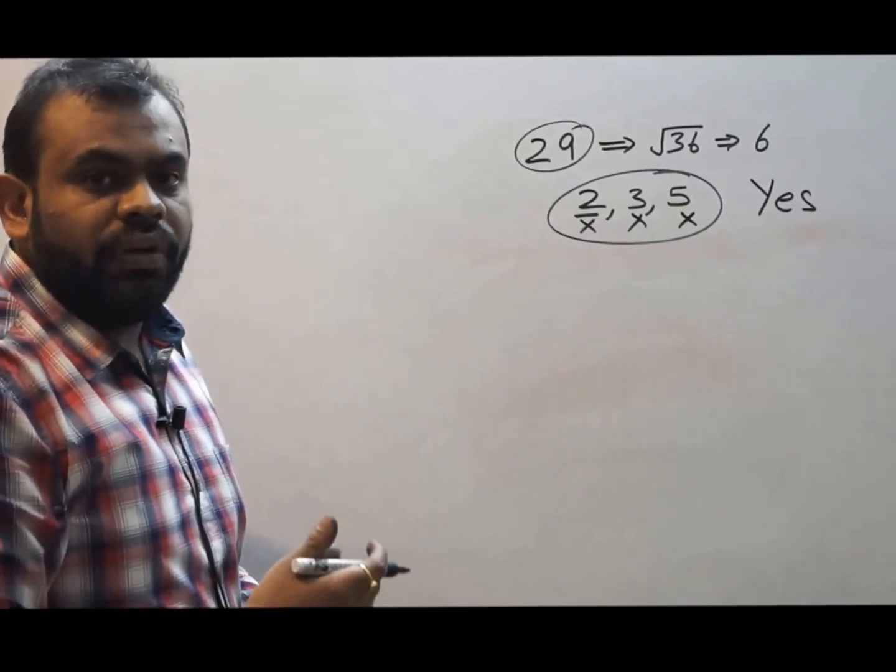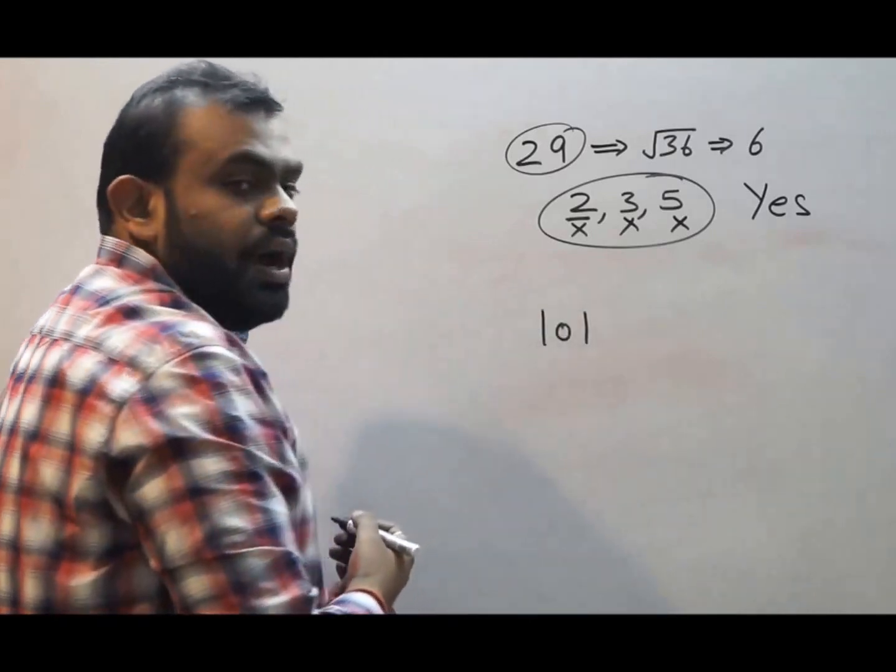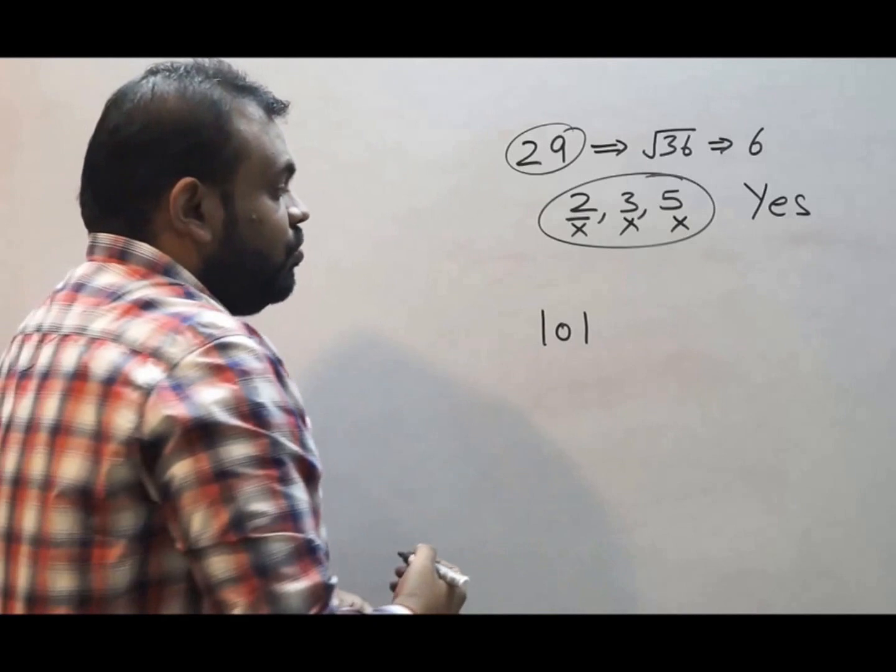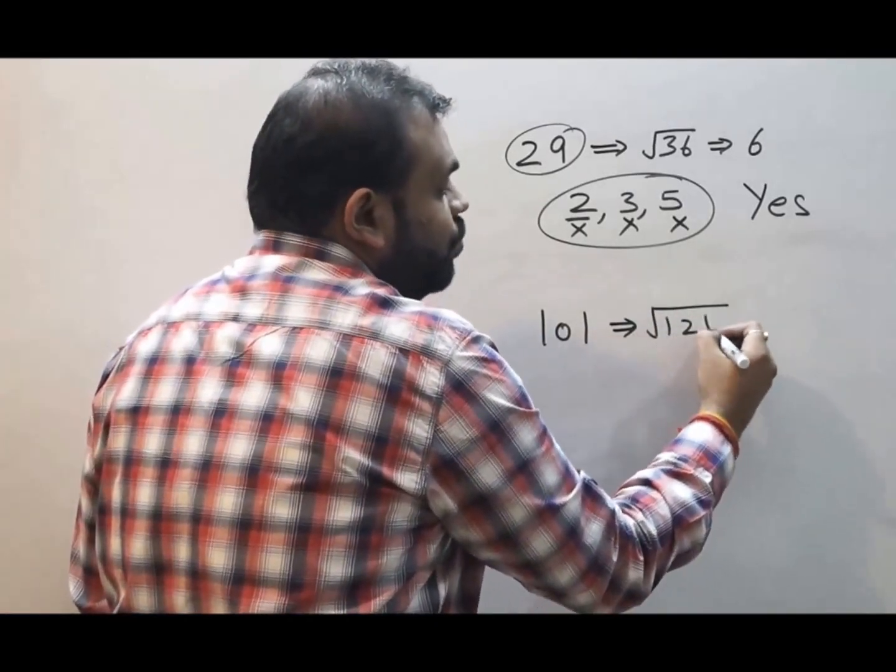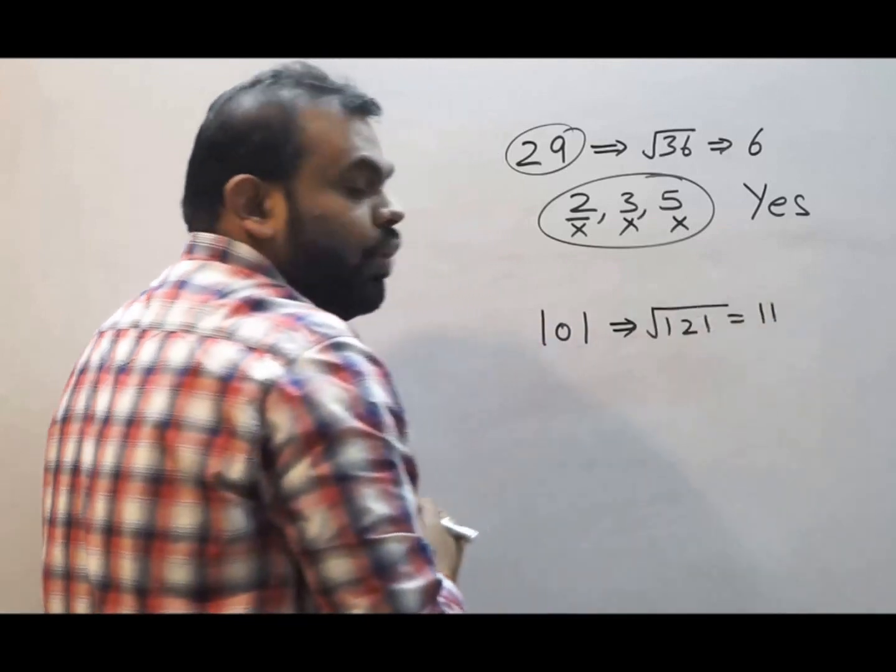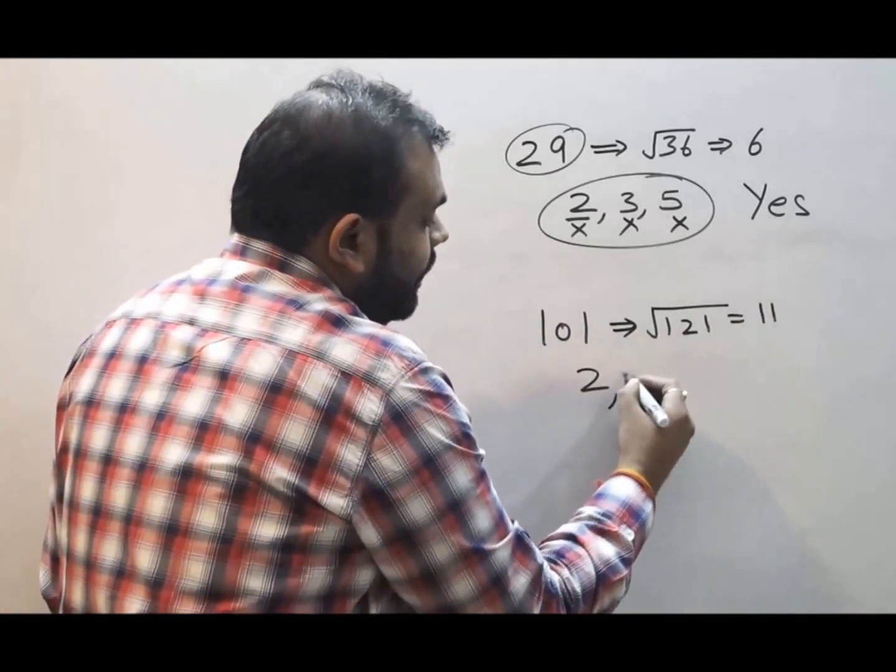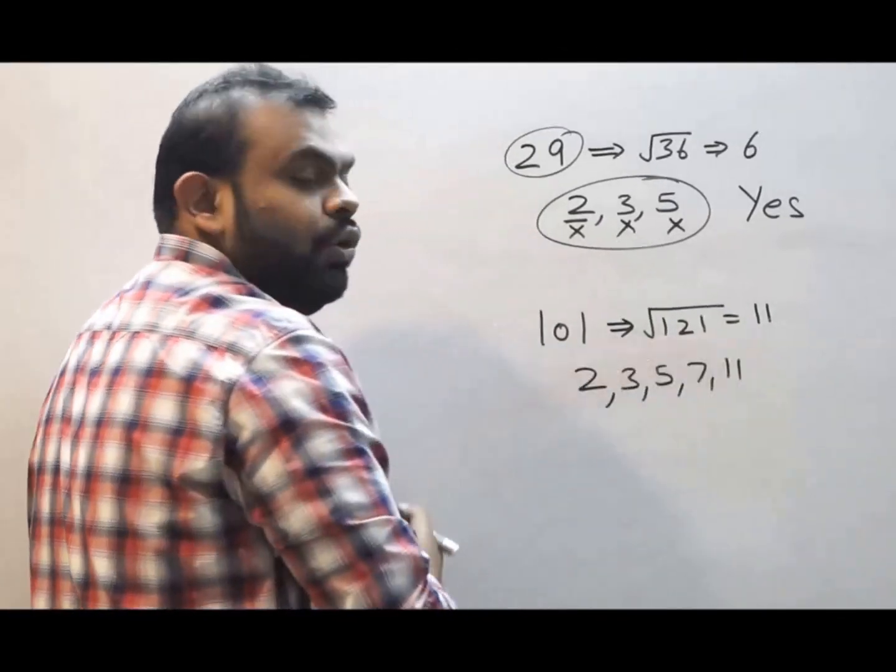I will take one more example. Let's say 101. I need to check whether 101 is prime or not. So I will take the larger perfect square that is 121, the square root of which is 11. Write down all the prime numbers up till 11. I will take 11 also over here.